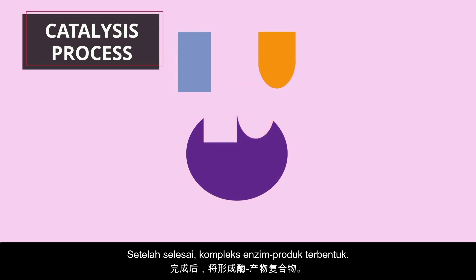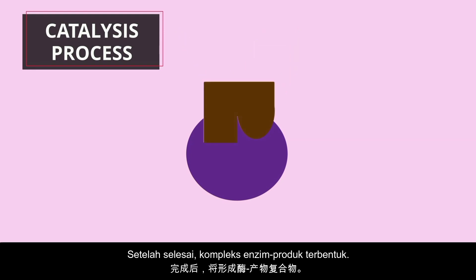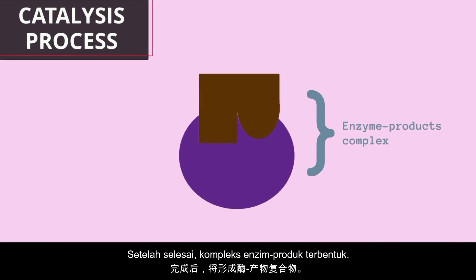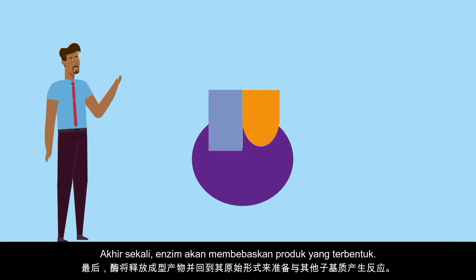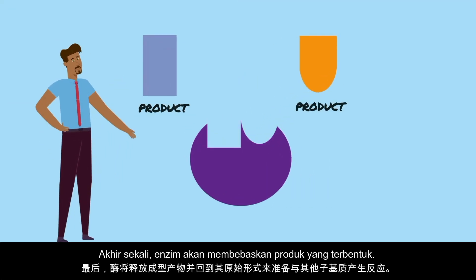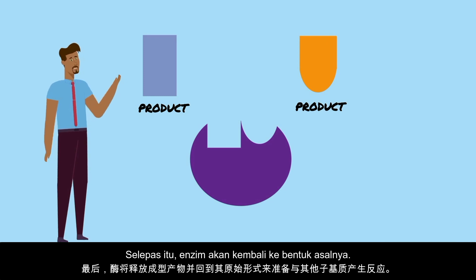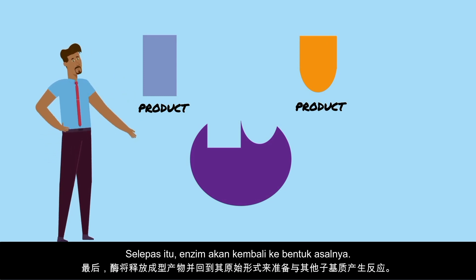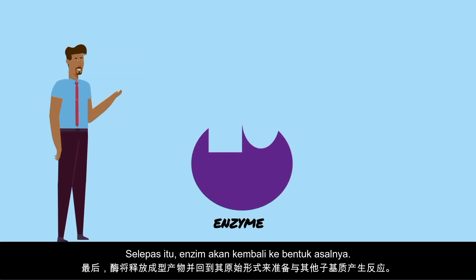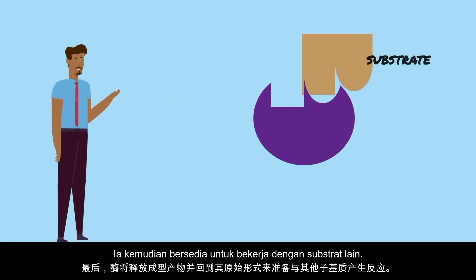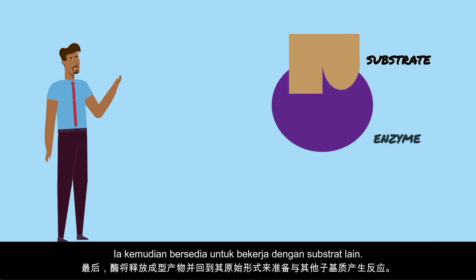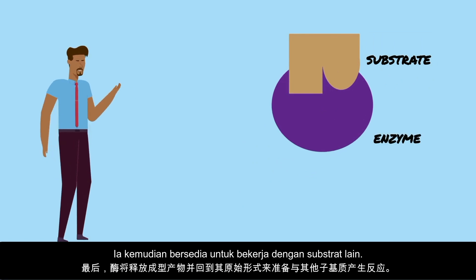When done, you will have the enzyme-products complex. Lastly, the enzyme will release the products that formed. After the enzyme releases the products, it returns to its original shape and is then ready to work on another molecule of substrate.